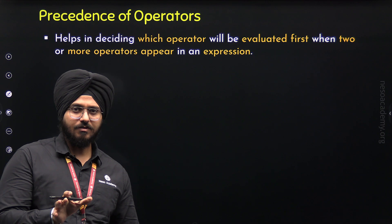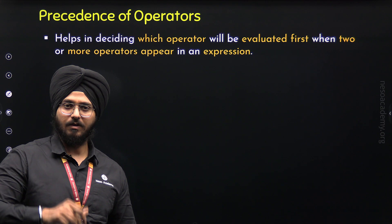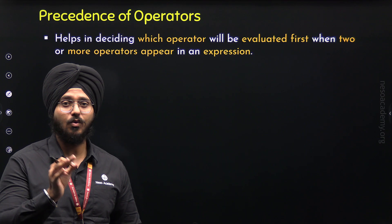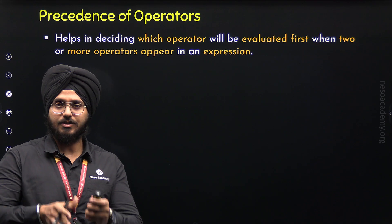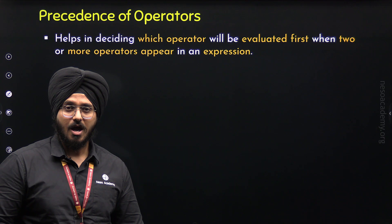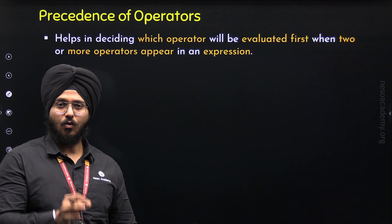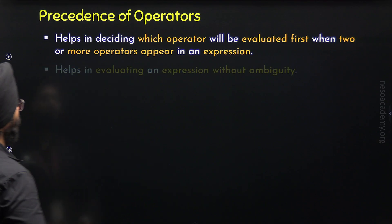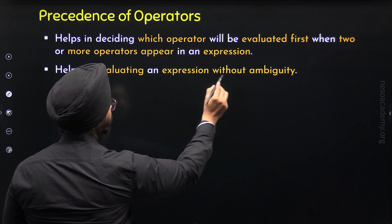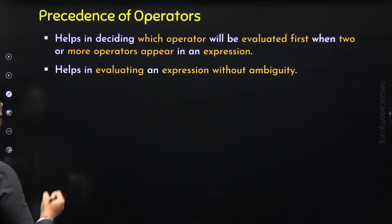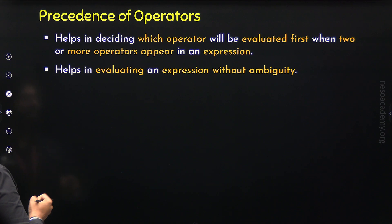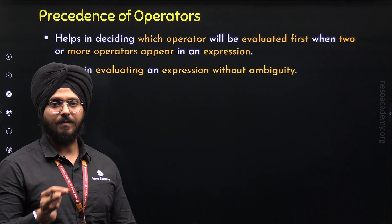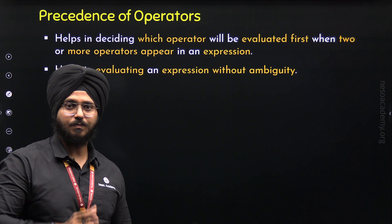An expression must always yield one possible answer. There cannot be two or more possible answers. An expression that evaluates to two or more possible answers is called an ambiguous expression. Precedence helps in eliminating the ambiguity of an expression by deciding the operator that needs to be evaluated first. It helps in evaluating an expression without ambiguity, giving us just one possible answer.